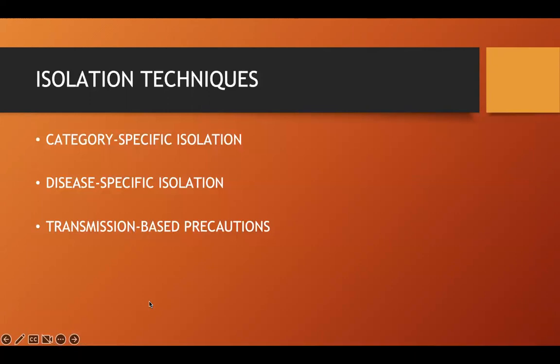Moving on to isolation techniques. Isolation techniques are in place to break the link at the transmission point. By isolating the patient, you limit the transmission of the infectious agent to the next host. The contact time a patient has to spread the infection is limited by isolation techniques.